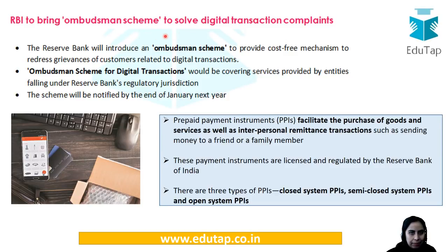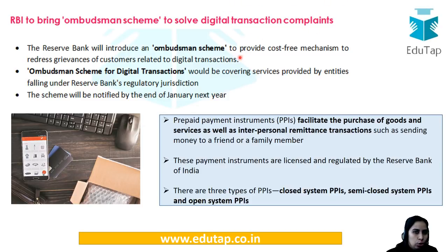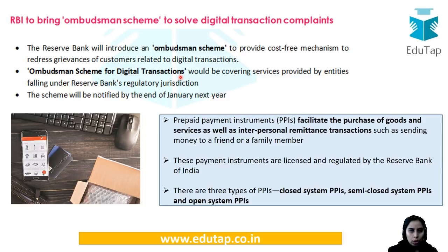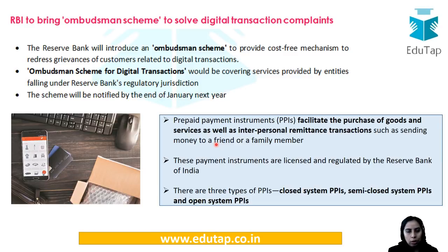RBI is to bring the Ombudsman Scheme. This scheme is related to digital transaction complaints, which is why it is important — as the digital revolution is booming and more people are coming into the ambit of digital transactions and using the internet, it becomes important for the Reserve Bank to keep track. Ombudsman basically stands for grievance redressal. The Ombudsman Scheme for digital transactions is yet to be notified. It will include PPIs — prepaid payment instruments — which facilitate the purchase of goods and services. There are closed, semi-closed, and open categories. For example, the mobile wallets or Paytm that you use are also prepaid payment instruments, and all those are going to be covered under this Ombudsman Scheme.